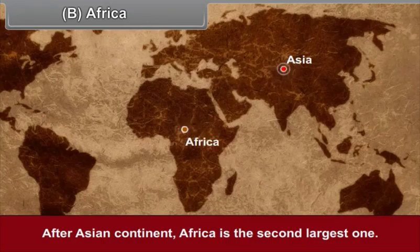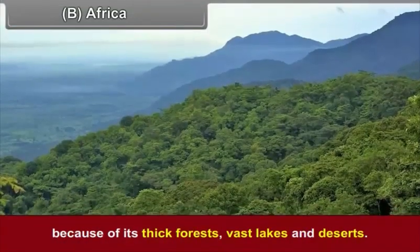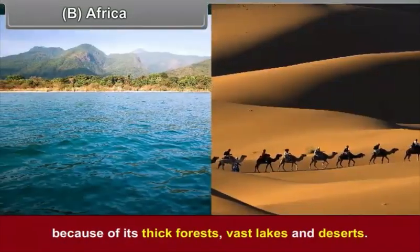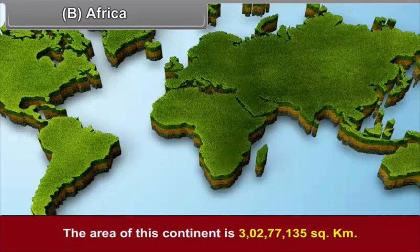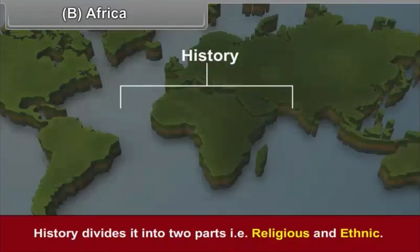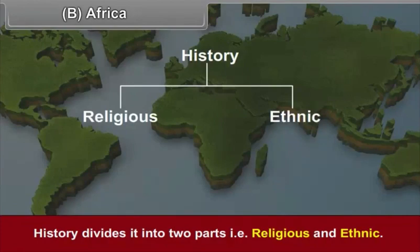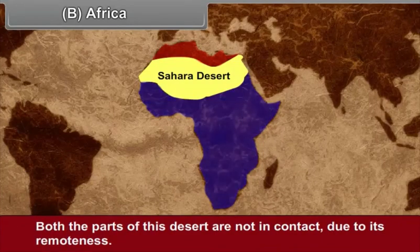After the Asian continent, Africa is the second largest one. The African continent was known as the unknown continent during the 18th century in the history of the world because of its thick forests, vast lakes and deserts. The area of this continent is 3,277,135 square kilometers. History divides it into two parts — religious and ethnic. The continent is divided into two parts due to the Sahara Desert.